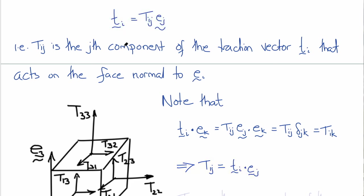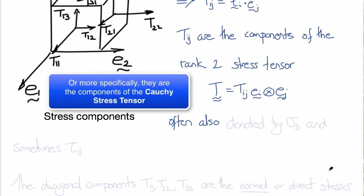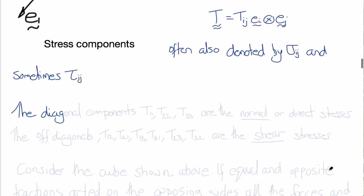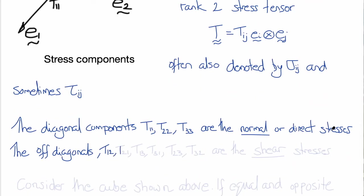T_IJ are the components of the rank 2 stress tensor defined by T = T_IJ E_I ⊗ E_J. Note that the notation sigma_IJ is frequently used for the stress tensor, and sometimes tau_IJ. The diagonal components — T11, T22, and T33 — are the normal or direct stresses. The off-diagonals — T12, T21, T13, T31, T23, and T32 — are the shear stresses.